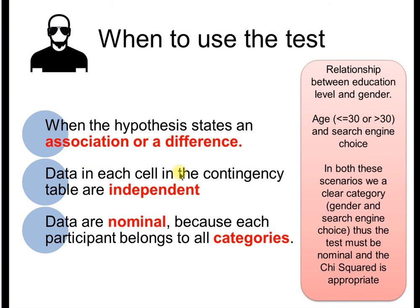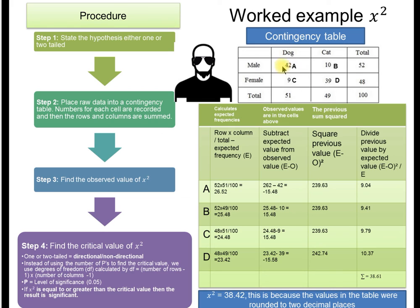If we just go back to our criteria, data in each cell in the contingency table are independent. Let's have a look. The data here are independent. You can't be a male who prefers dogs and a male who prefers cats. You can't be both. You have to be one or the other. So these data are independent. We put in our raw data. I've counted 42 males who said that they prefer dogs, 10 males who prefer cats, 9 females prefer dogs, 39 females who prefer cats.